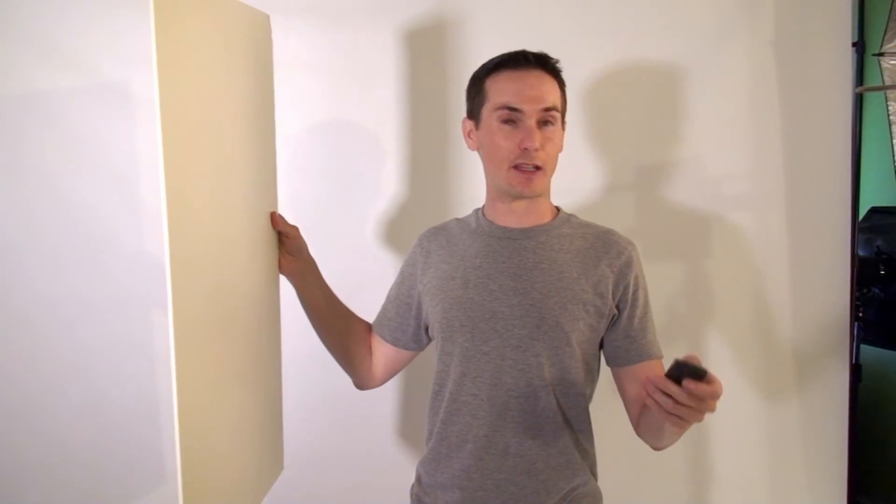Typically, I would use a bounce card or something on the side. In fact, let me show you what that looks like. So just a simple foam core to show you the difference between the two. I'll just hold this right up here and it should fill in a lot of the dark side shadows. Same shot as the previous.